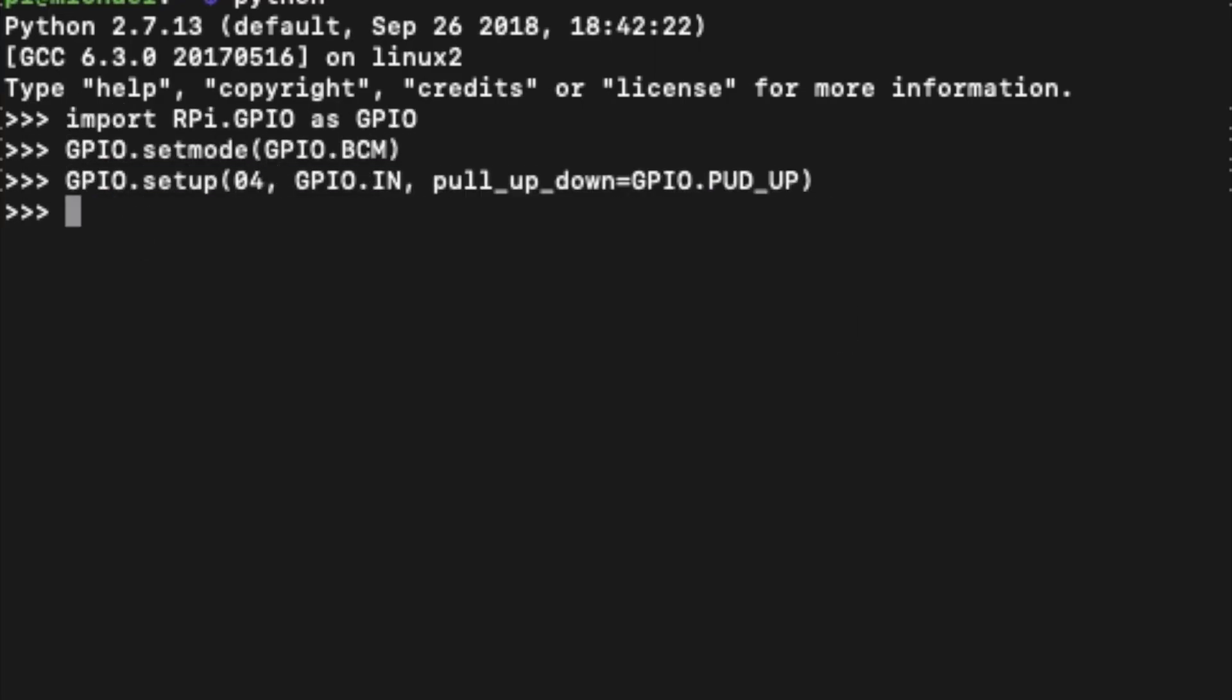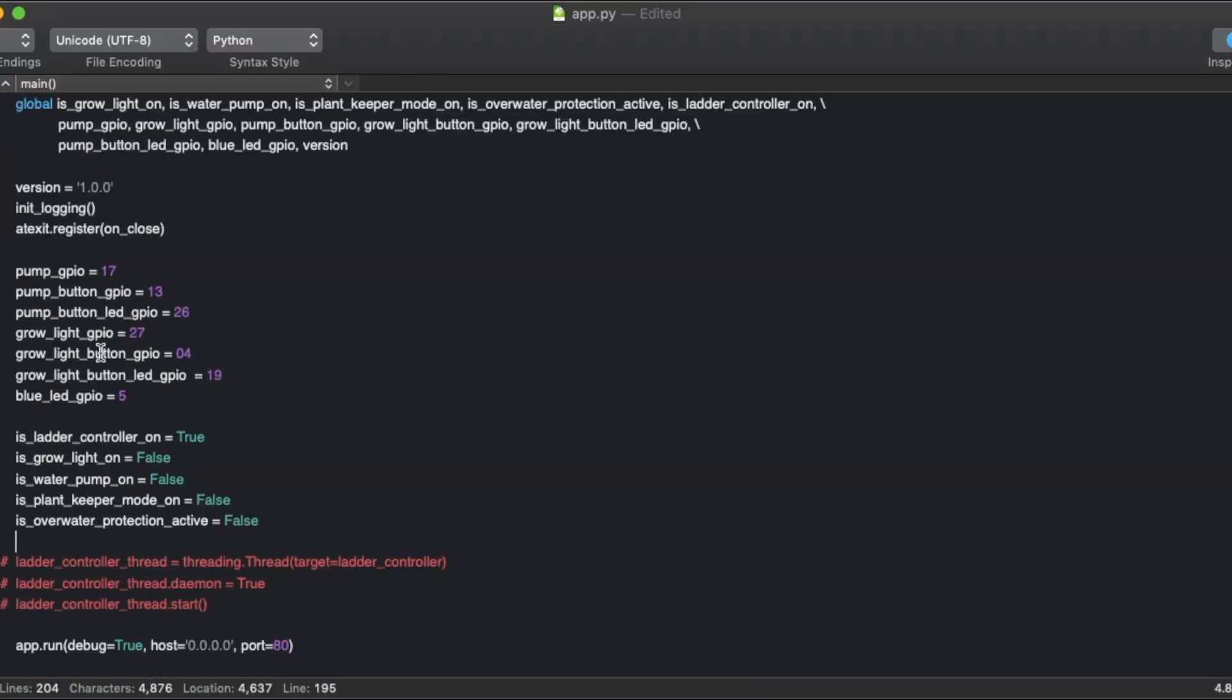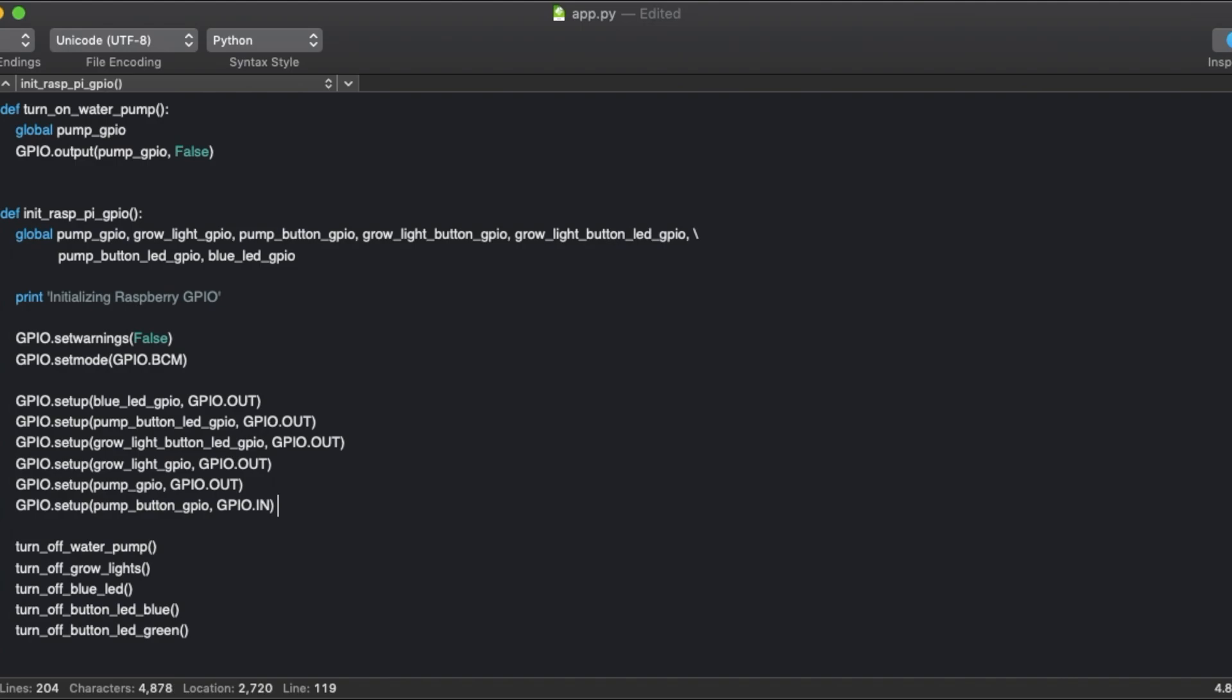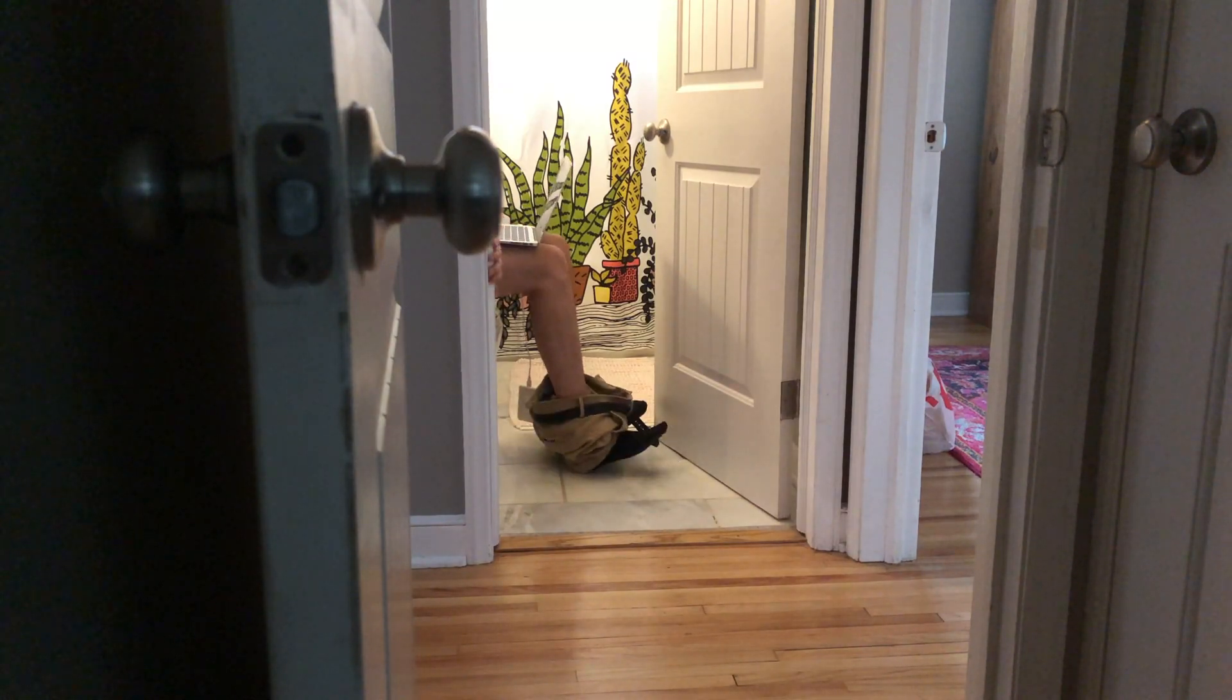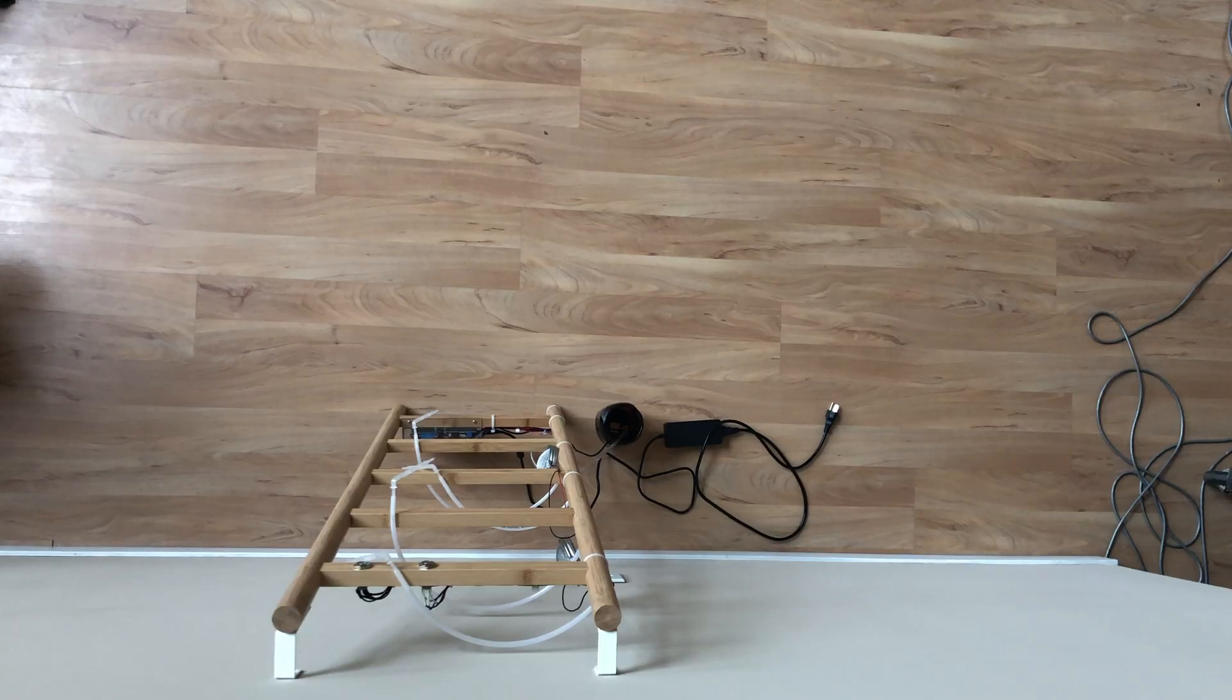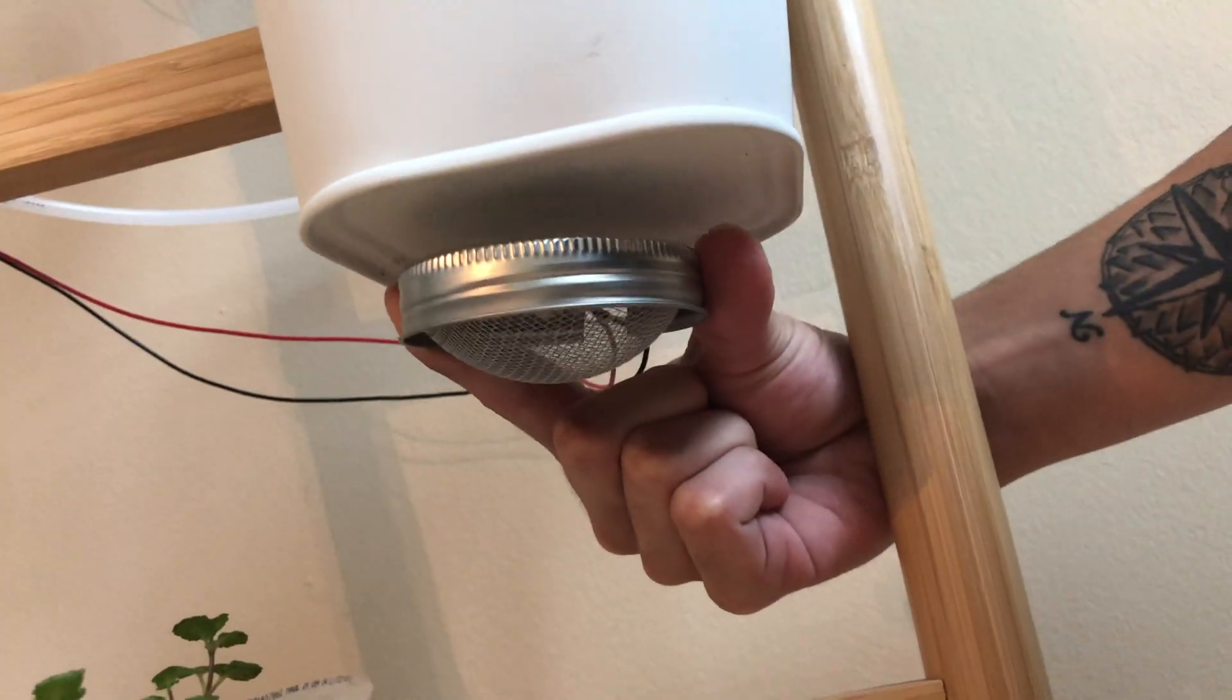But now let's do what I do best. Let's write some code. The best part about writing code is you can do it from anywhere. I installed some magnets on the back of the grow lights. This allows me to pop them easily into place.